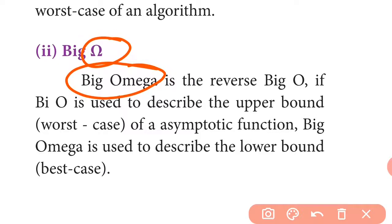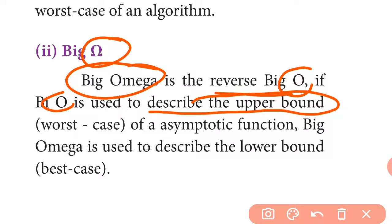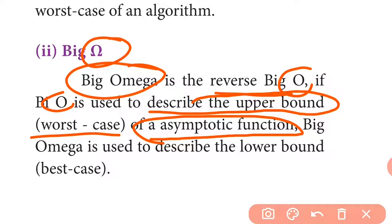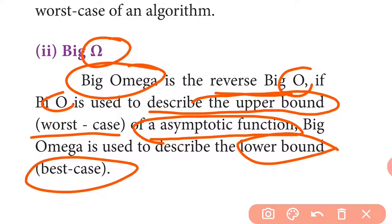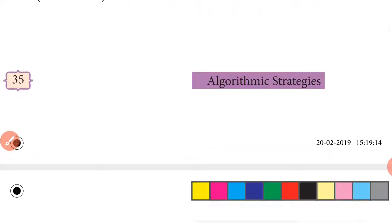Big O is used to describe the upper bound — the worst case of an asymptotic function. Big Omega is used to describe the lower bound — the best case. Theta represents the average case.